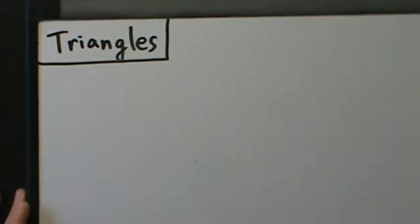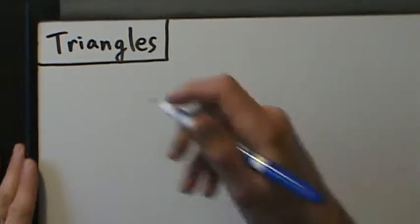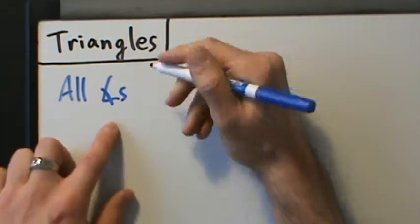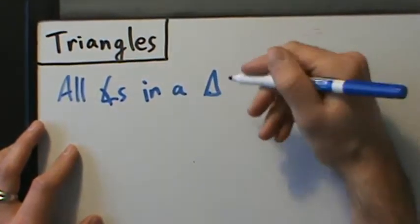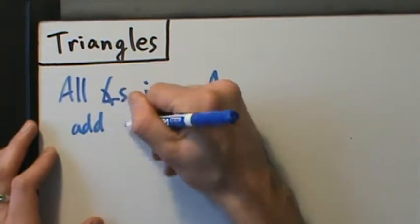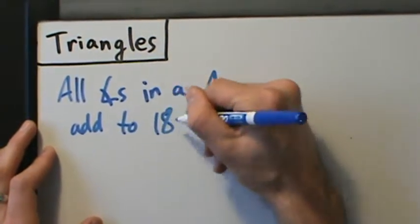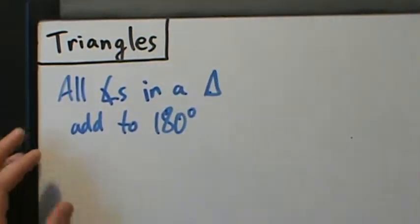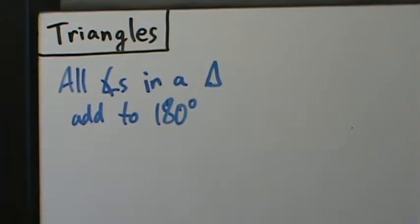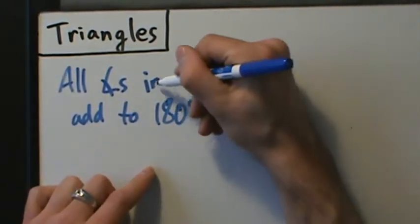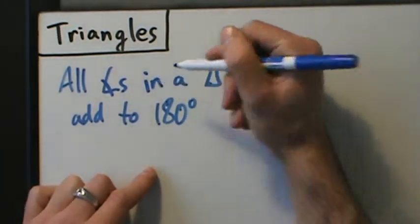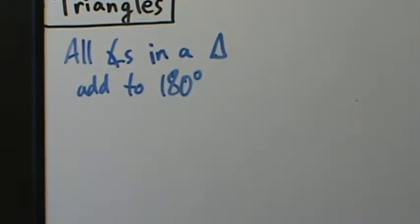Let's go ahead and talk about some things with triangles — a lot of this might be review from geometry. All angles in a triangle add to 180 degrees. Triangles have three angles, so if you add up all three angles you're going to get 180 degrees.